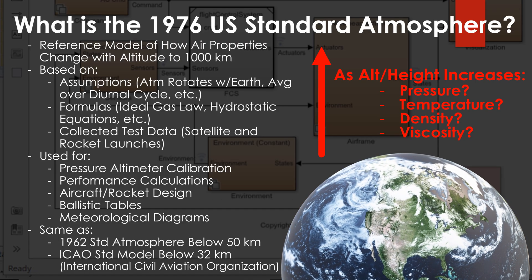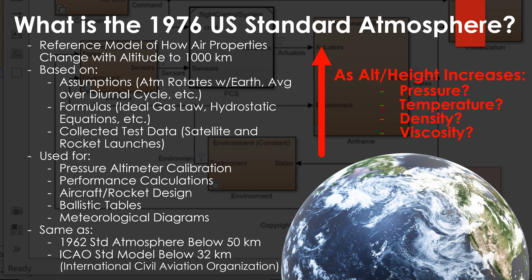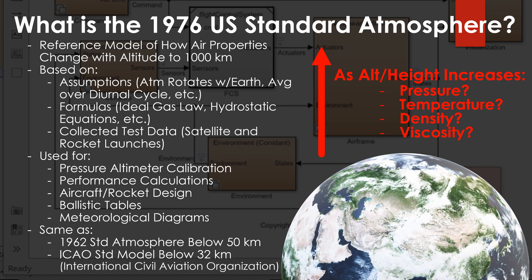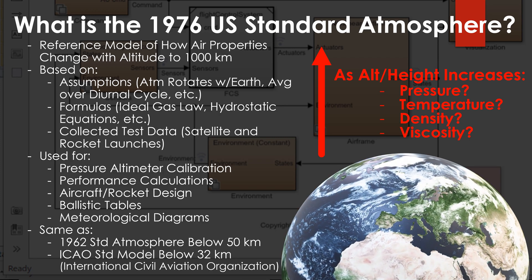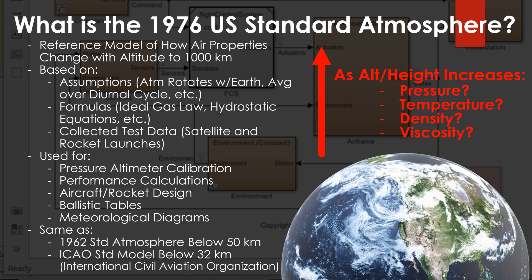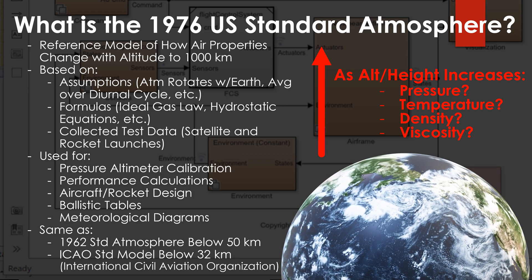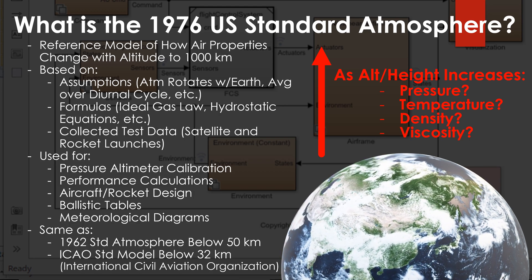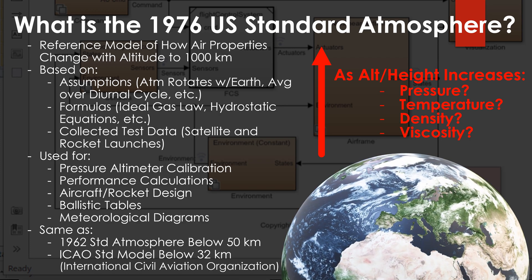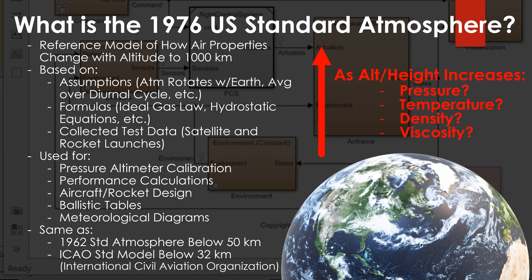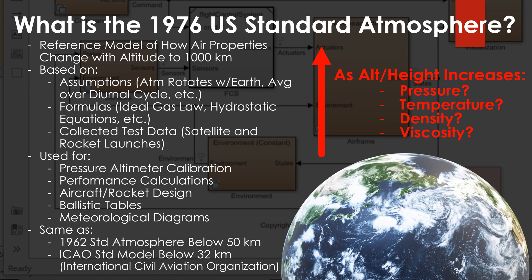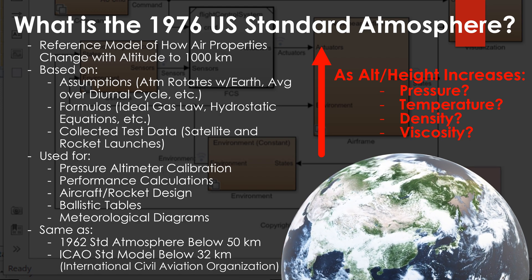The 1976 U.S. standard atmosphere is a model of how different air properties change as you change your height or altitude — things like pressure, temperature, density, and viscosity. This becomes a standard day or standard atmosphere. The model is based on assumptions, formulas, scientific principles, as well as test data collected by flying through the atmosphere. It's useful for performance calculations, pressure altimeter calibrations, and design aspects where you assume a standard atmosphere or standard day.